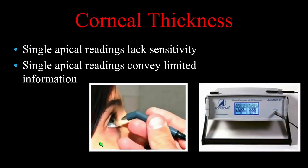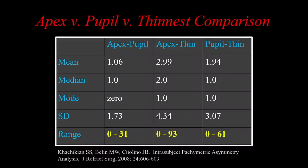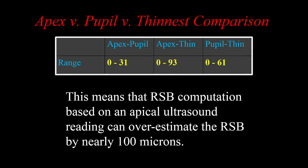If you're relying on placido instead of tomographic imaging, you have to use ultrasonic pachymetry for corneal thickness, and single apical readings lack sensitivity and convey very limited information. Corneal thickness at the thinnest point is a much better single-point screening tool. In work we published in 2008, we looked at over 1,200 individuals previously screened as completely normal — normal pachymetry by ultrasound and normal placido — and we found values that almost approached a 100 micron difference between thinnest reading and apical reading. That means your residual bed and PTA computations can be off by nearly 100 microns.